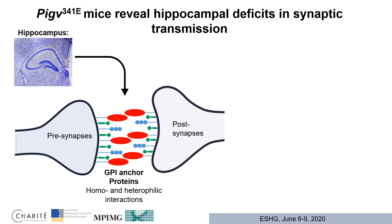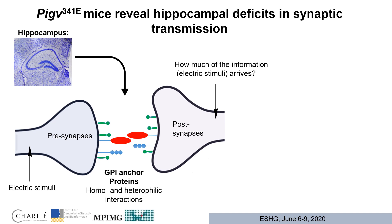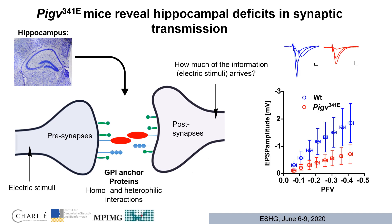Given deficits in spatial learning and memory, we investigated the hippocampus — a brain area important for these functions — and more specifically hippocampal synaptic connections. GPI-linked proteins play a crucial role in synapse formation and plasticity by mediating homo- and heterophilic interactions between pre- and post-synapses. In GPI-Anchor deficiency, this leads to a reduced number of such interactions and consequences on synaptic transmission. We performed electrophysiology recordings by stimulating pre-synapses with an electric stimulus and measuring information arriving at post-synapses. Indeed, mutant mice showed reduced synaptic transmission displayed by a lower EPSP amplitude at different electric intensities.